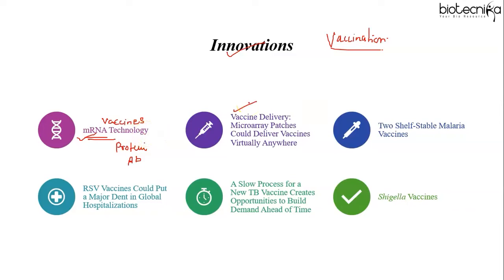Another innovation is vaccine delivery via microarray patches (MAPs). Microarray patches are coin-sized patches covered either with tiny needles coated in dry vaccine that painlessly penetrate the skin, or a formula that dissolves when the patch is pressed onto the skin for two to five minutes. These patches don't require cold temperatures, weigh significantly less than vials requiring needles and syringes, don't require any mixing, and can be given by untrained community health workers in almost any conditions. Plus, the needle-free, painless delivery increases the odds that people will get all the vaccinations they need.